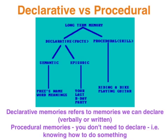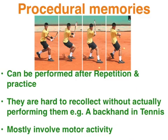Declarative or explicit memories are memories that we can declare, either verbally or in a written sense. Procedural memories, on the other hand, we don't need to declare how to do something — we can just do it. Procedural memories typically require repetition and practice; they're skills.